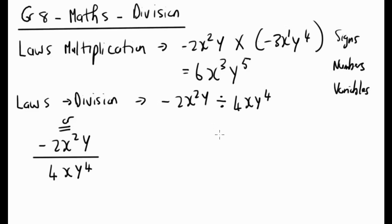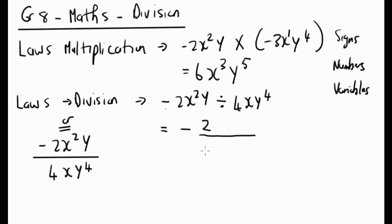Let me show you the law quickly. We have a negative divided by a positive, so just like with multiplication, dividing different signs means the answer will be negative. Then 2 divided by 4 gives us 2 over 4 in fraction form, and then x to the power of 2 divided by x to the power of 1.